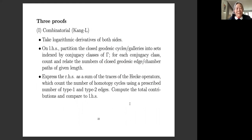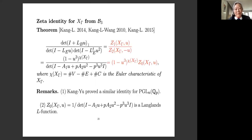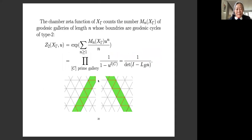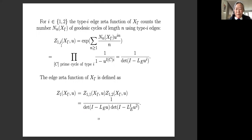There are three proofs of this identity. The first is combinatorial: we take the logarithmic derivative of both sides and show they are equal by counting geodesic cycles and geodesic galleries and comparing with the expression on the right-hand side. This identity was discovered through this counting. One subtlety is that when I define the zeta function for cycles, I define it only in terms of the primes — I did not define it in terms of conjugacy classes of gamma, because there is no good expression specifying which conjugacy classes of gamma should be picked. It certainly includes those generated by primitive elements, but there are other things involved.